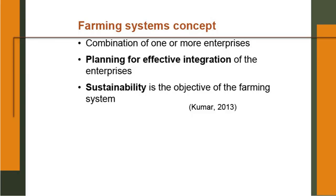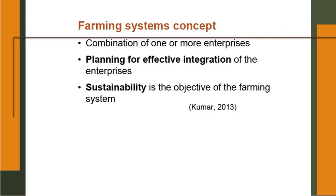Farming system concept: combination of one or more enterprises. In a farming system you need to combine at least two enterprises or more. Planning for effective integration of the enterprises is necessary — without planning, you will fail in the system. Planning in advance is necessary: what kind of enterprises will give you more benefit, what should be the selling point, where can I sell it, is there any demand for these enterprises, what would be the cost, how can I arrange credit if required, how can I make a pond, and so on. Sustainability is the objective of the farming system — at every stage, sustainability should be kept in mind.